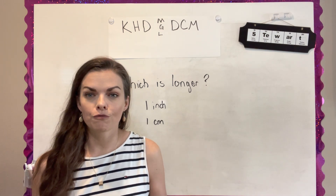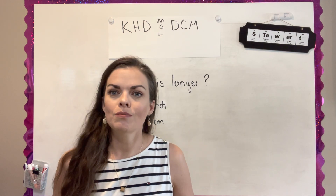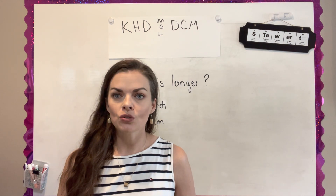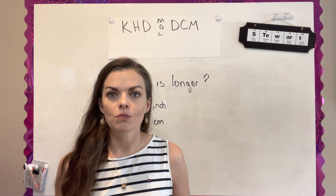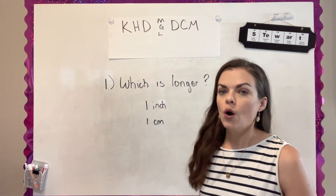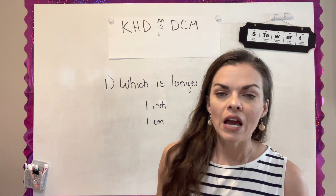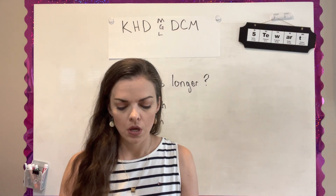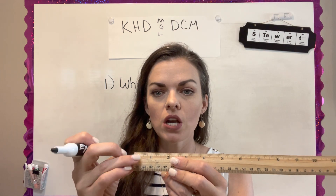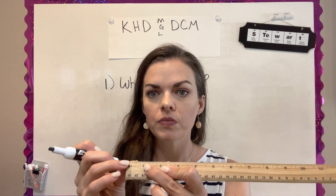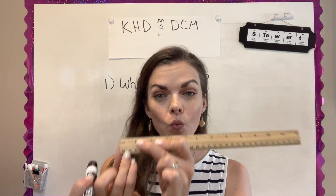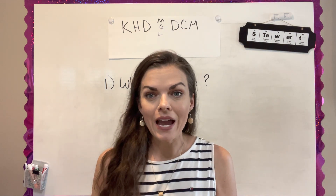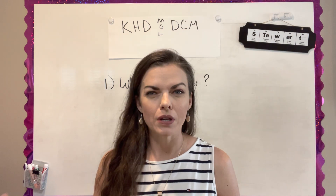For some of you, this may be the first class that will pretty much always be using the metric system. This chapter gives you an opportunity to adjust to converting between the standard or English unit system and the metric system. Question number one asks which is longer: one inch or one centimeter? You do need a ruler for this chapter. You can see that one inch is much longer than one centimeter, so one inch is longer. One inch is equal to exactly 2.54 centimeters, and you'll read about that in the chapter.